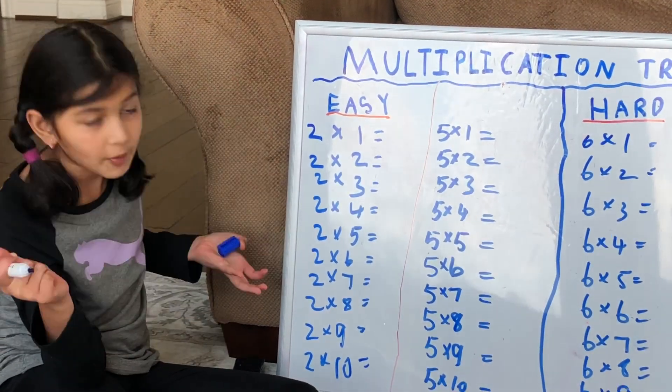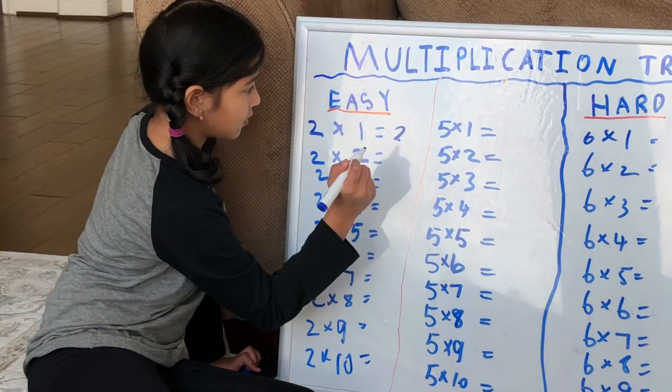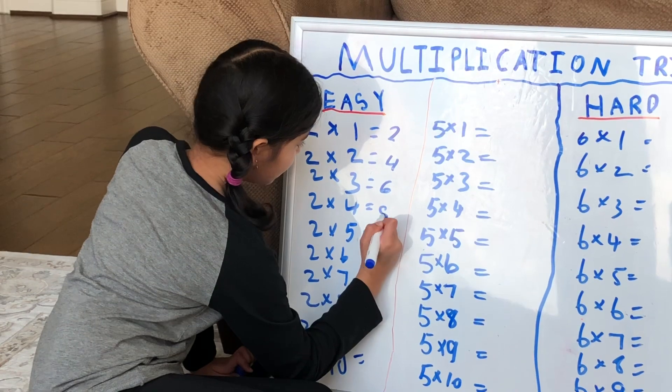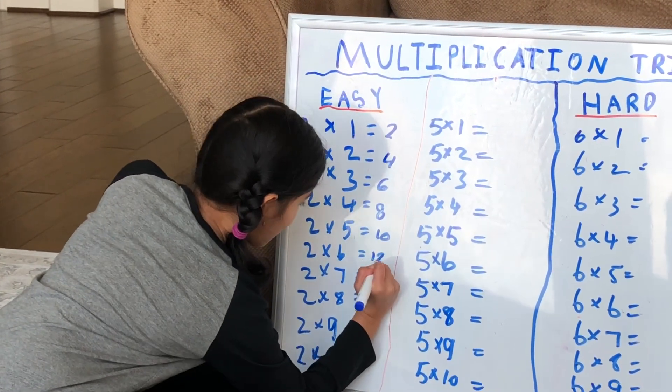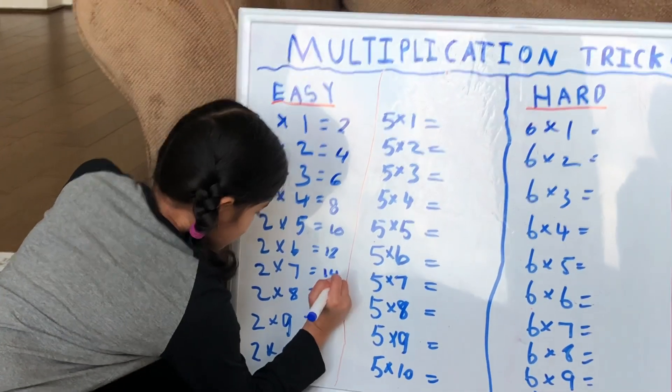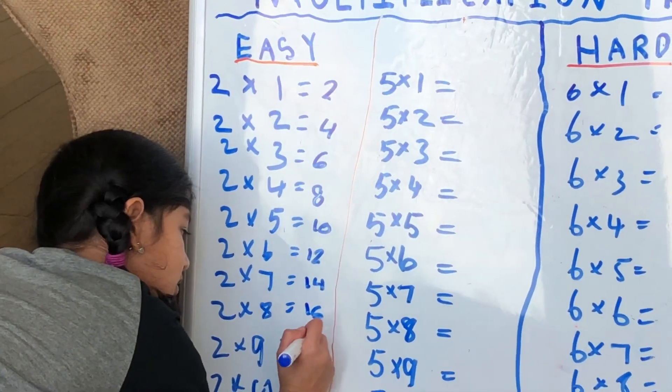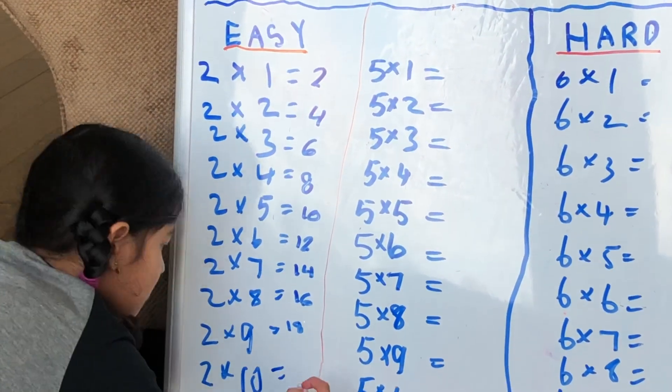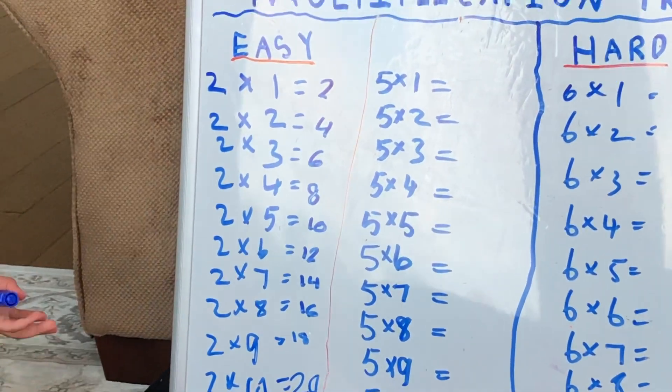So, 2, 4, 6, 8, 10, 12, 14, 16, 18, and then this equals 20. See? Then you've finished the 2s.